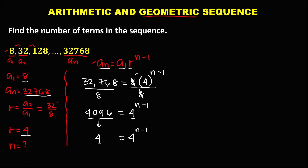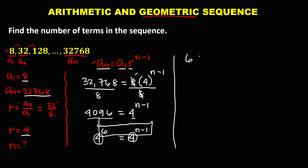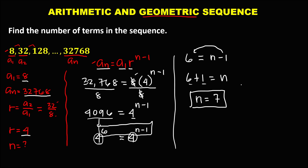Since we now have the same base of 4 on both sides, we can equate the exponents: 6 equals n minus 1. To solve for n, transpose negative 1, so 6 plus 1 equals n. Therefore, n, the number of terms, is equal to 7. This given sequence has 7 terms.